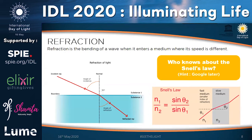Refraction is a change in direction of light caused by a change in the speed of light. We have an incident ray falling on a water surface — it changes its medium, because of which its speed changes as well. Snell's law states that the ratio of the sine of the angle of incidence to the sine of the angle of refraction is constant and equals the ratio of the speed of light in different mediums.